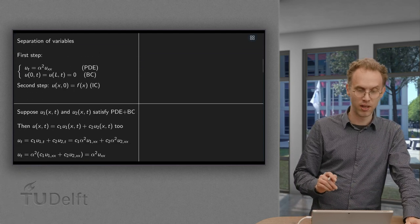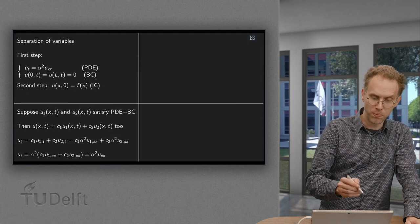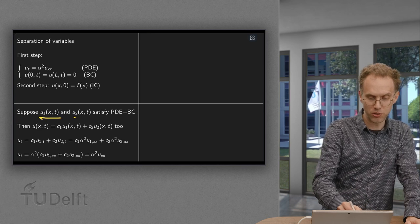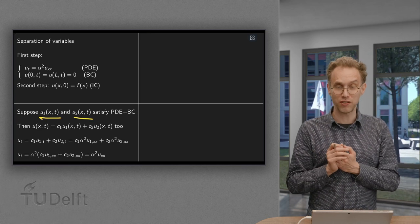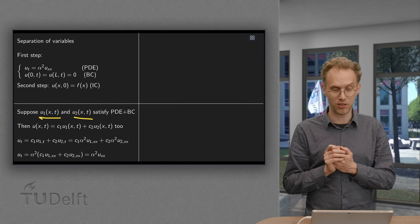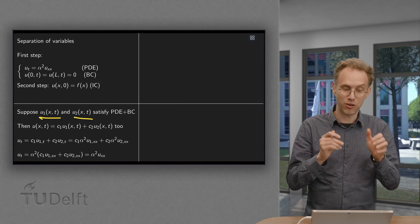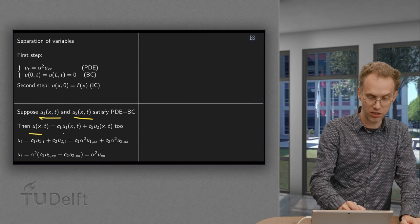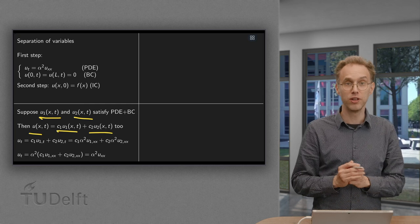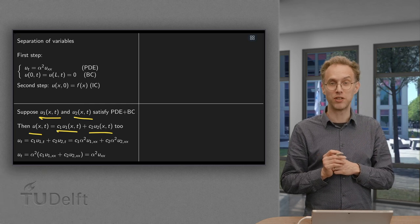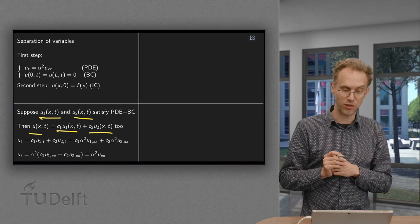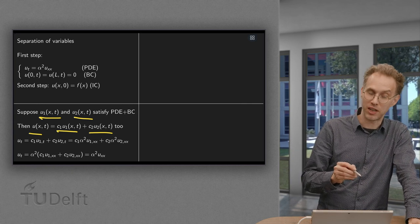First we suppose we find a U1 and a U2 that both satisfy the PDE and the boundary condition. Then adding the linear combination of those two, U is C1U1 plus C2U2, also satisfies both the PDE and the boundary conditions. Well, how can you see that?